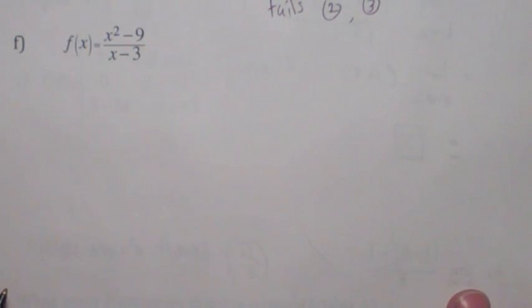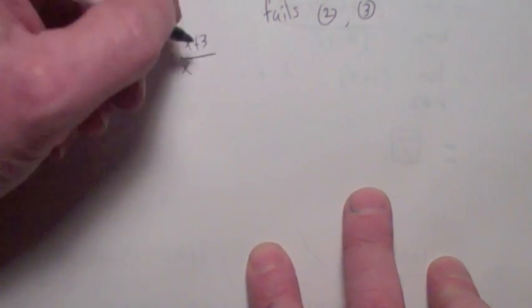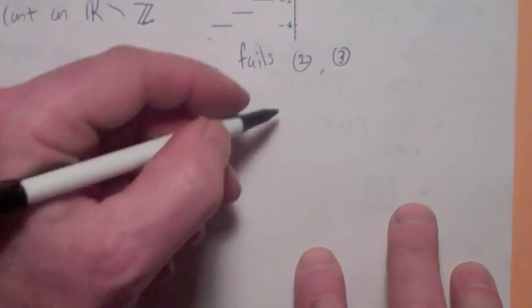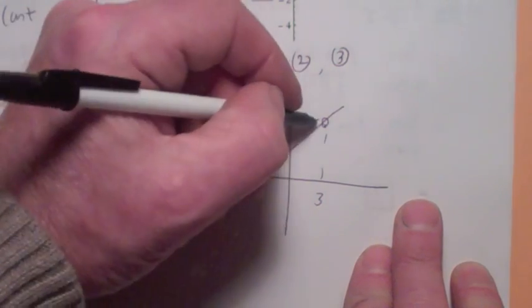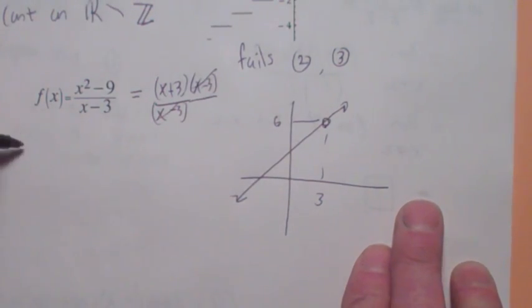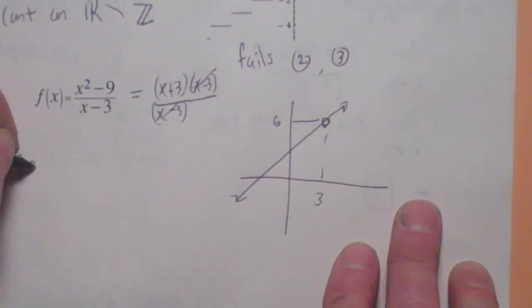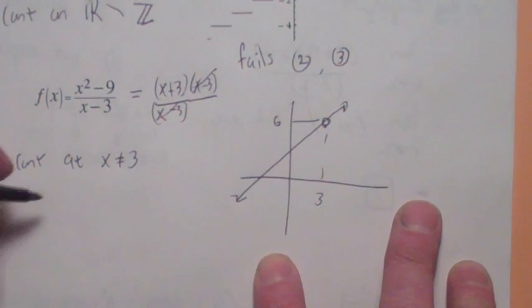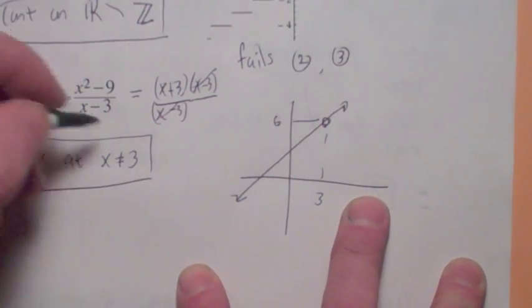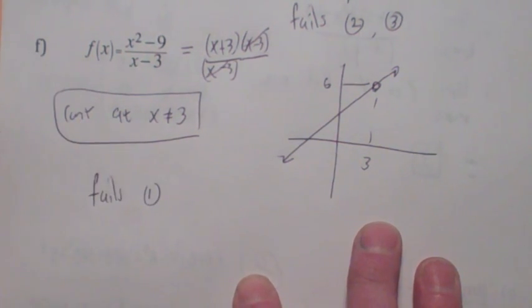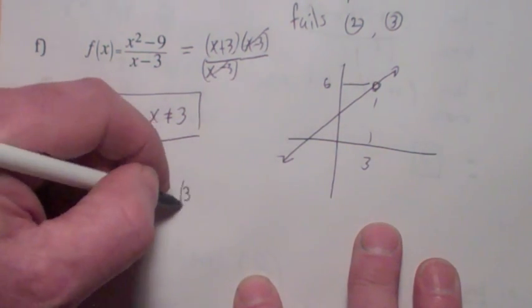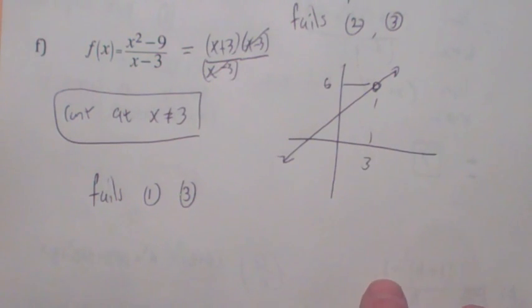This one — if you factor it, you would see that there's a hole at x equals 3. The graph looks like a line with a hole right there. So it's continuous at x not equal to 3. Which conditions does it fail? Is the function defined there? No, it's a hole — so it fails condition 1. Does the limit exist? Yes, so it doesn't fail condition 2. And obviously if it's not defined, it can't equal the limit, so condition 3 fails as well.